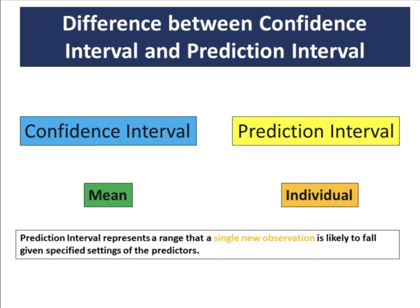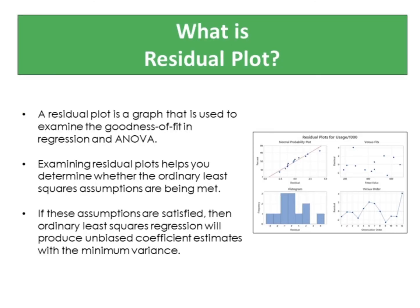What is the residual plot? A residual plot is a graph that is used to examine the goodness of fit in regression and ANOVA. Examining residual plots helps you determine whether the ordinary least squares assumptions are being met. If these assumptions are satisfied, then ordinary least squares regression will produce unbiased coefficient estimates with the minimum variance.